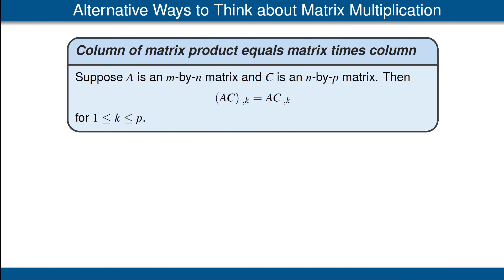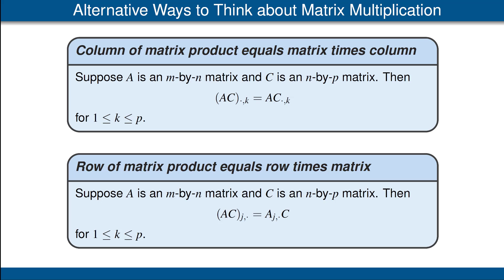We now want to give two more alternative ways to think about matrix multiplication. Suppose A and C are matrices and the number of columns of A equals the number of rows of C, so AC makes sense. The first alternative says the kth column of AC is equal to A times the kth column of C. For the second alternative: the jth row of AC is equal to the jth row of A times C. Please ponder the definitions to make sure you understand why both of these are correct.